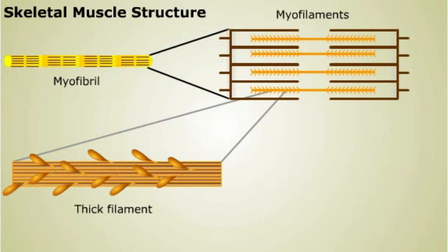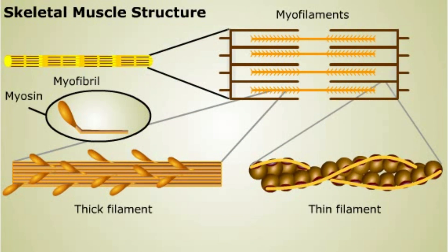A thick filament is composed of a staggered array of myosin proteins, each with a globular head and a long tail. A thin filament consists of two strands of the protein actin and one strand of tropomyosin, a regulatory protein.